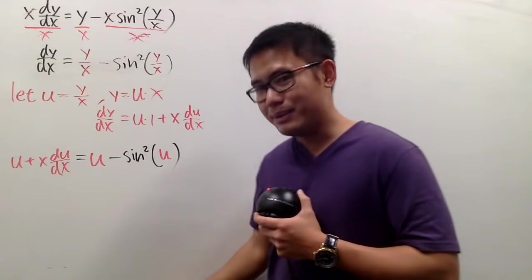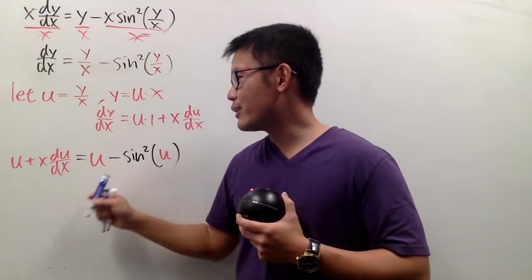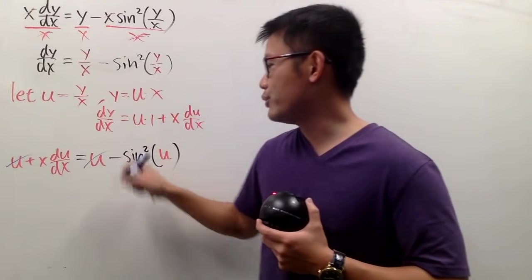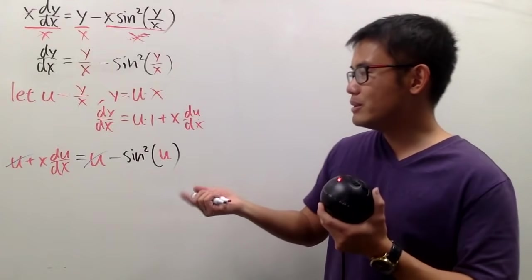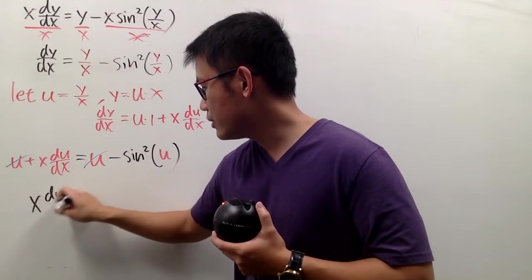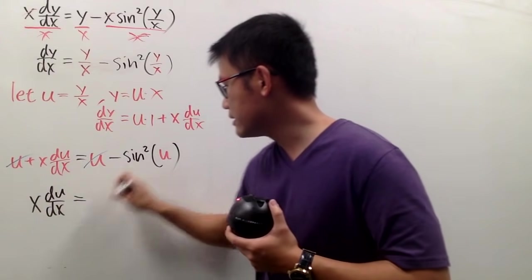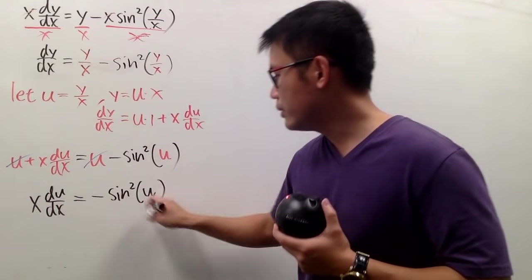What happens? You see that this is nice enough that this u and that u cancel each other out if you just subtract u on both sides. And, in fact, this is now separable. And let me just write this down better right here. This is x times du dx, and this is equal to negative sin squared u, like this.